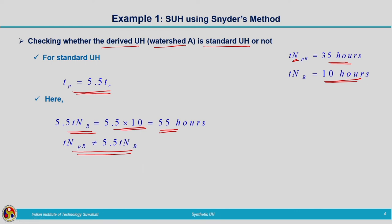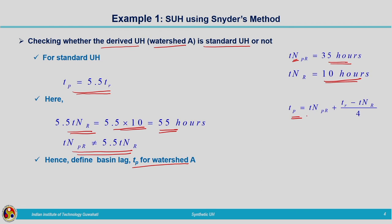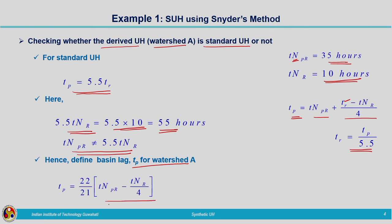Since it is not a standard unit hydrograph, we redefine the basin lag using Snyder's formula: tP = tNPR + (tR − tNR) / 4. Assuming this becomes a standard unit hydrograph, tR = tP / 5.5, so substituting gives tP = (22/21) × tNPR − tNR/4. With the known values, tP is calculated as 34.048 hours. This redefined basin lag will be used in subsequent steps.